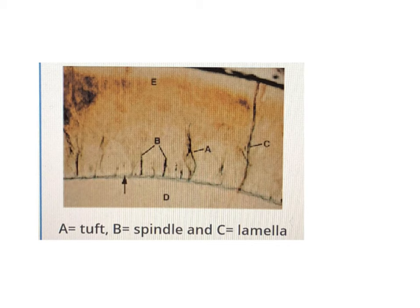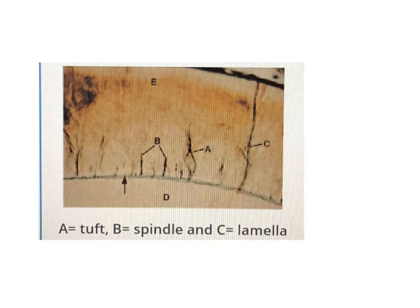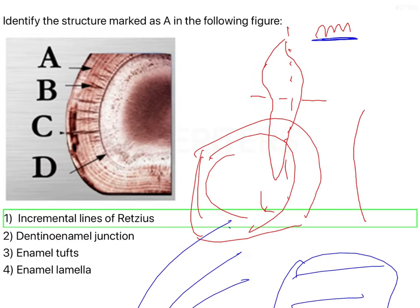What you see here is A, B, and C. A is nothing but a tuft, B is a spindle, and C is a lamella. Coming to your question, you have A, B, C, and D. So your A is nothing but your incremental lines of Retzius. B is your enamel tuft, C is an enamel lamella, and D is dentinoenamel junction.